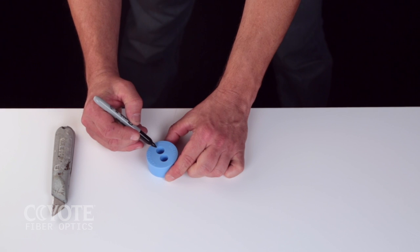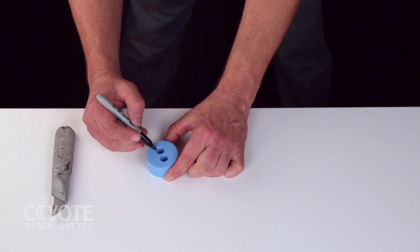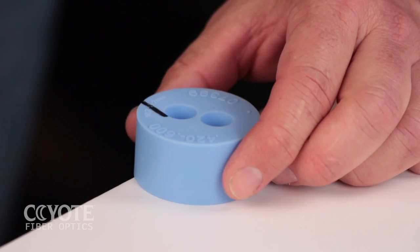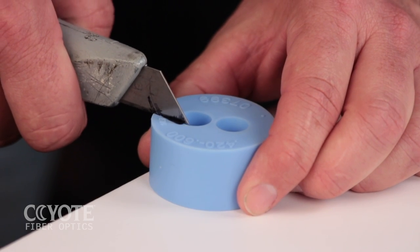If slitting the grommet is required, lay the grommet on a stable flat surface and mark your cutting line with a permanent marker. Use a utility knife to cut through the grommet.